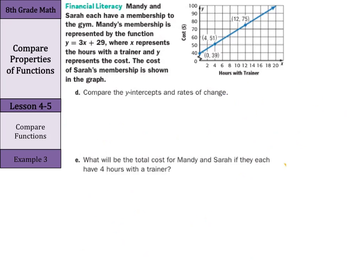Now, our financial literacy question states, Mandy and Sarah each have a membership to the gym. Mandy's membership is represented by the function y equals 3x plus 29 where x represents the number of hours with the trainer and y represents the cost. The cost to Sarah's membership is shown in the graph. So, the previous example, we had an equation and a table and we compared. This question, we have an equation and a graph. So, once again, we're asked to compare the y-intercepts and rates of change.